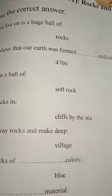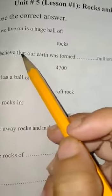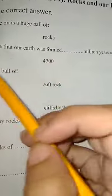Next question: Scientists believe that our earth was formed 4600, 4700, or 4800 million years ago. The correct answer is 4600 million years ago.